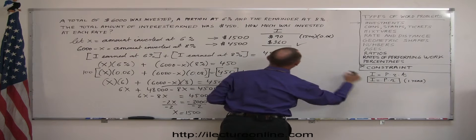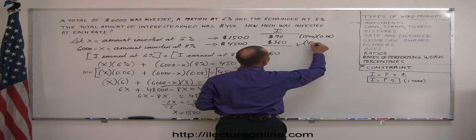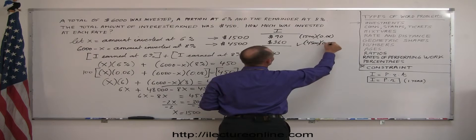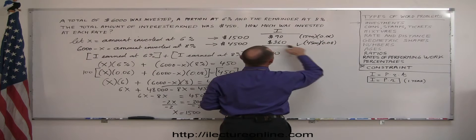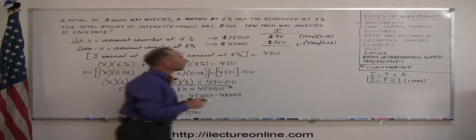I took principal times rate, so I took the 4,500 times 0.08. Quickly did that in my head and said, 360. Together, it adds up to 450.